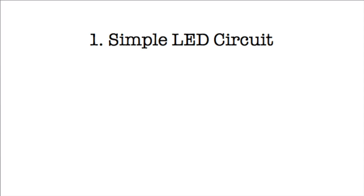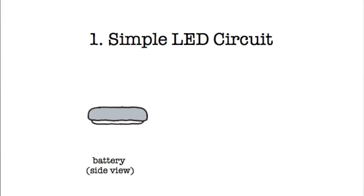There are three main parts to a circuit. First is the battery. In our case, we'll be using a coin cell battery, which has a plus side and a minus side. The plus side is marked on the top with a plus.